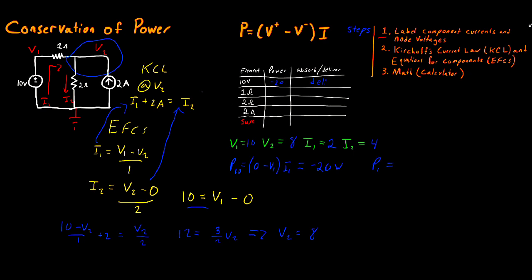Moving on to the 1 ohm resistor: we subtract in the direction the current is flowing — V1 minus V2, multiplied by I1. That's (10 minus 8) times 2, which equals 4 watts. This is positive, and for a resistor it's always going to be positive because resistors take electrical energy and turn it into heat. If you ever analyze a circuit and find that a resistor gives you a negative power, you have made a mistake and should check your work. So this is 4 watts, absorbed.